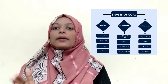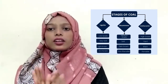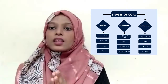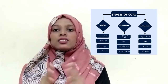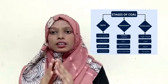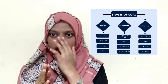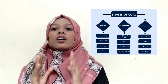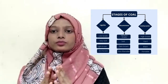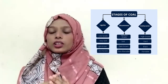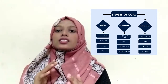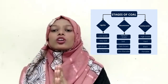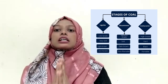Now let's talk about the last stage. The third stage is Anthracite. Anthracite is black in color. It is very hard, flammable, and is used as a fuel. It is actual coal and is very beneficial.